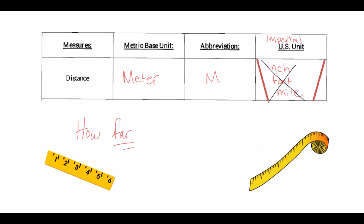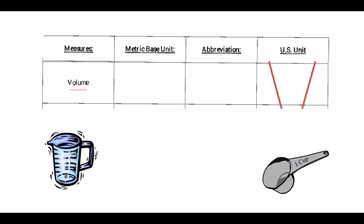Volume is defined as the amount of space that something takes up. The metric base unit for volume is more commonly known as the liter and is abbreviated with a capital L. In US units, this could be given with a fluid ounce, a cup, or if some of you bake, you might say it's like a teaspoon. These are really confusing because we can't convert between them easily, and we don't want to be using those US units.